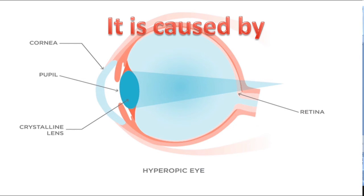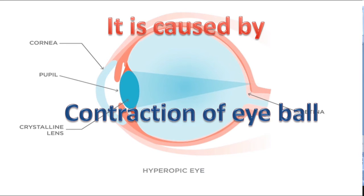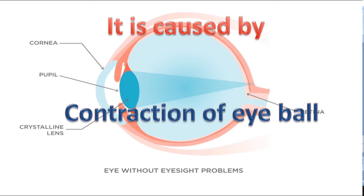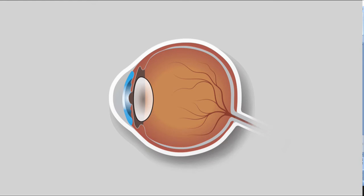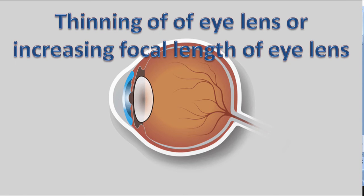Hypermetropia is caused by contraction of the eyeballs, or a decreasing distance between the retina and eye lens, thinning of the eye lens, or increasing focal length of the eye lens. These causes result in light coming from an object converging beyond the retina, so a clear image cannot be formed.